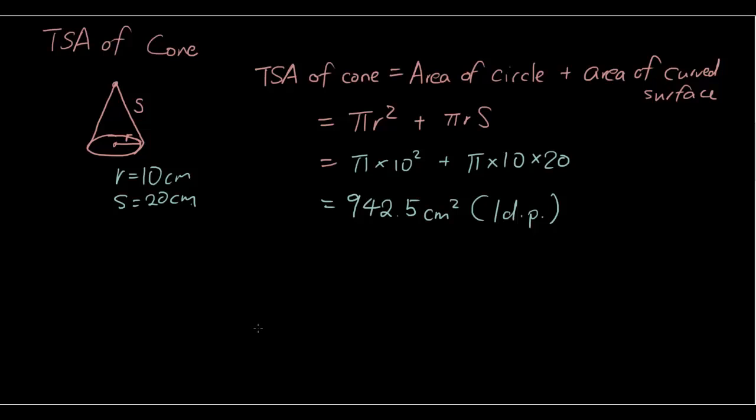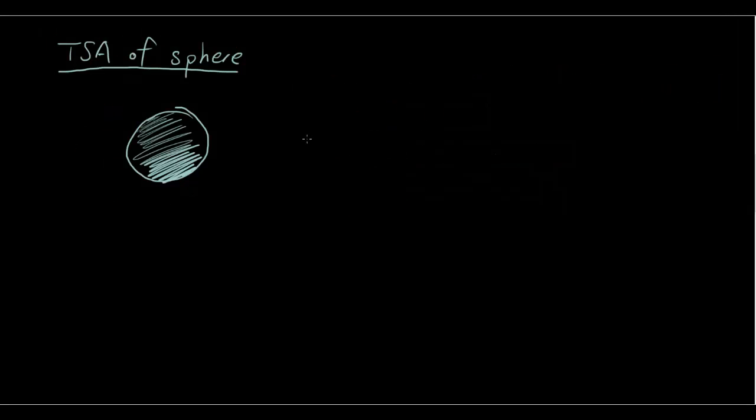And the last shape that we're going to do is a sphere. So the total surface area of a sphere is 4πr².